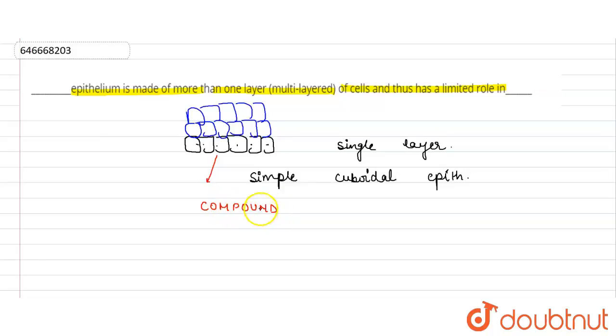Now since the same cells are present, that is only the cuboidal cells are present, hence it will become the compound cuboidal epithelium. It can be with any epithelium. It can be compound squamous epithelium, it can be compound.